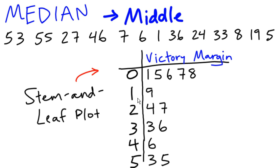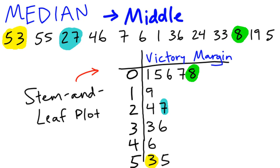You might wonder what all these numbers mean. You don't see a 35 up there. What that actually means: the 53 goes right here — 53. 27 goes here — 27. And last example, 8 — the number 8 just goes as 08. As you can see, all 13 scores are in this stem and leaf plot.